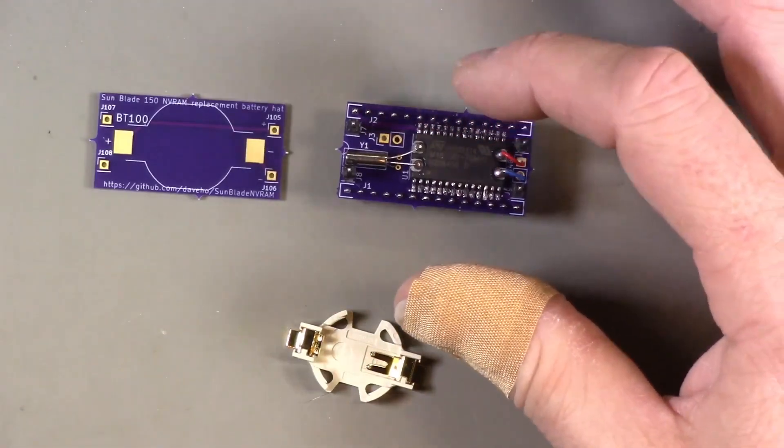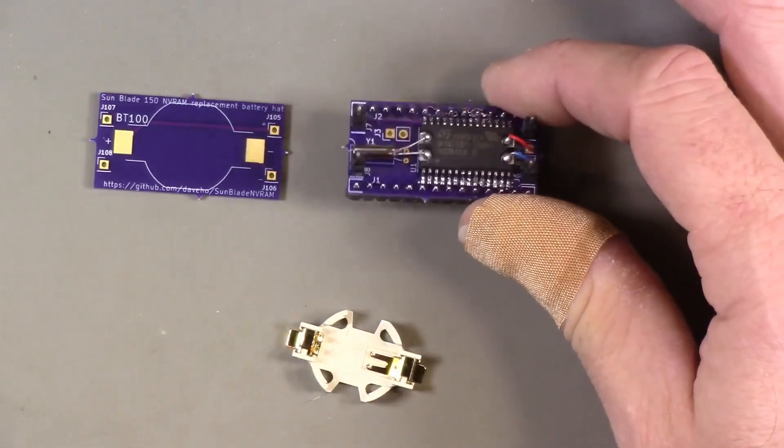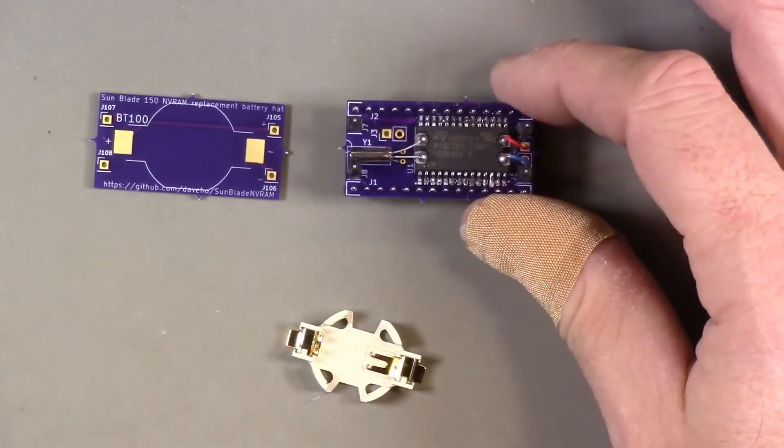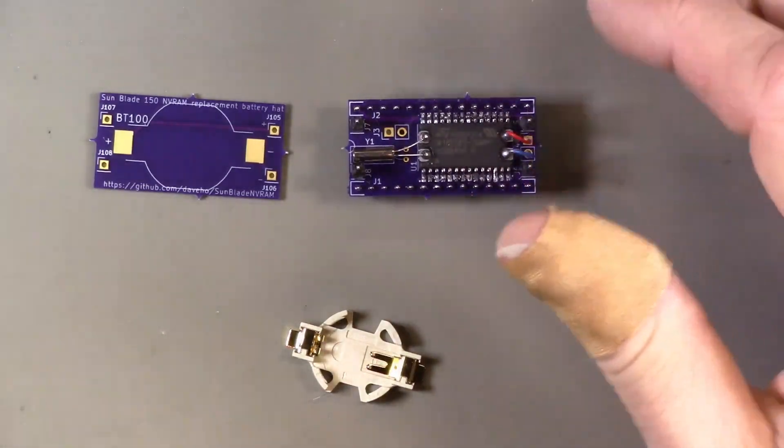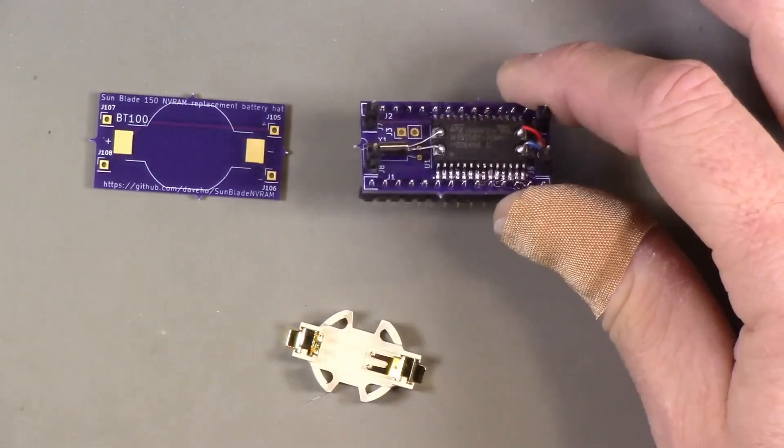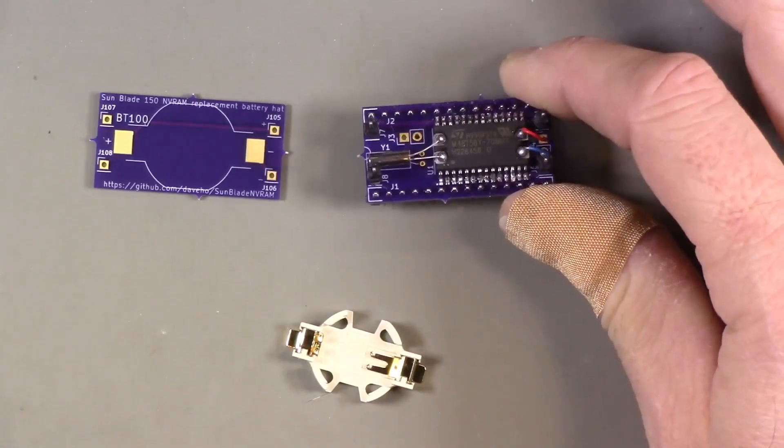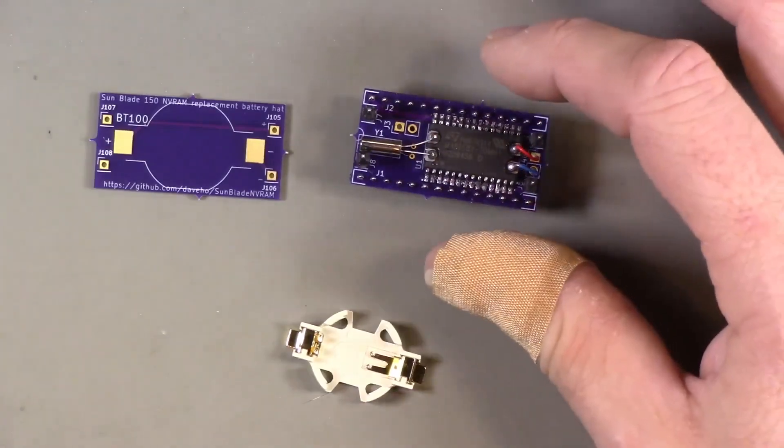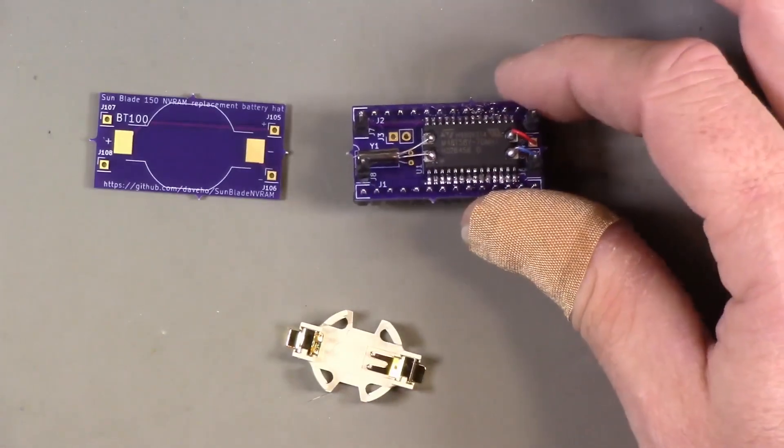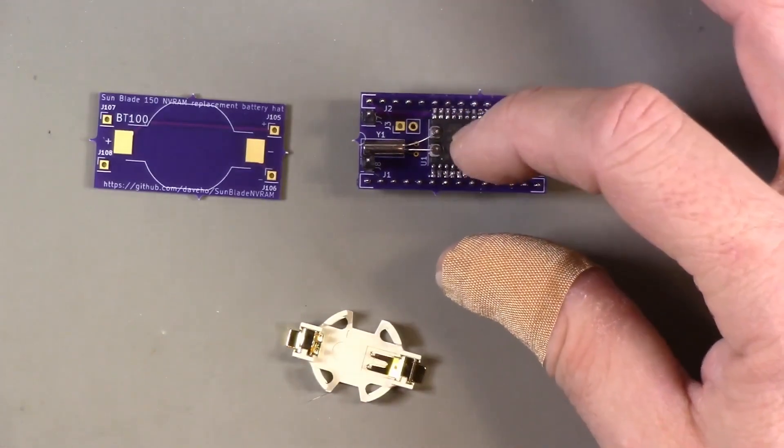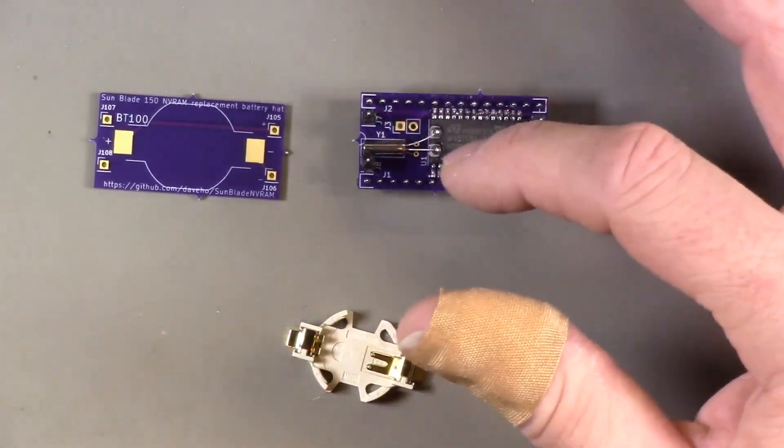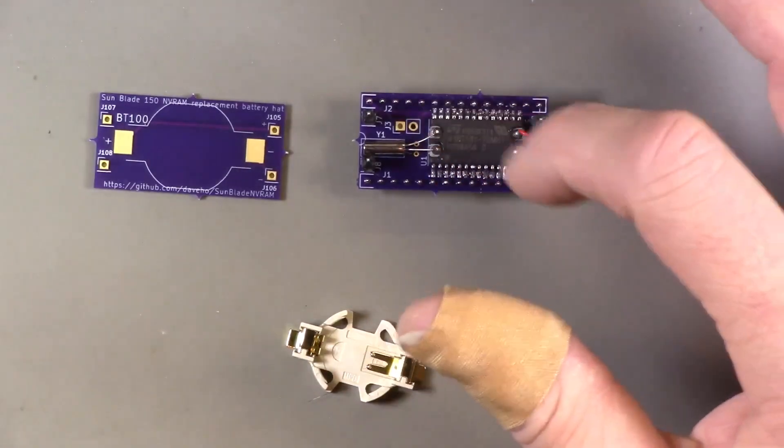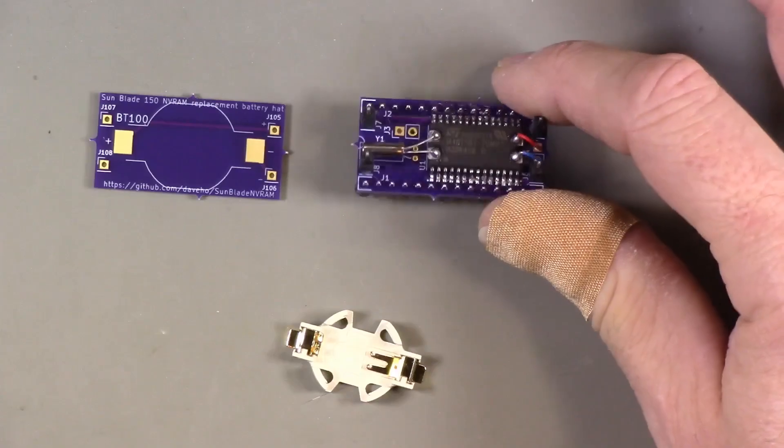In the description, I'll link to the assembly instructions that I came up with. I actually do have a reasonably straightforward way to solder this if you're careful. Basically, you have to put the pin headers in first, and then you put the chip down. You tin the pads first, and then solder the corner pads on the chip.